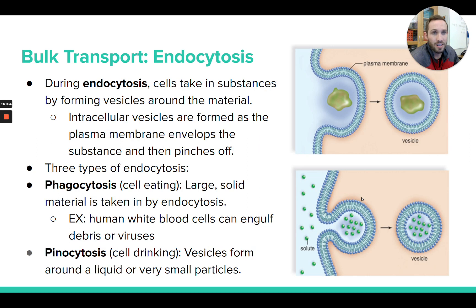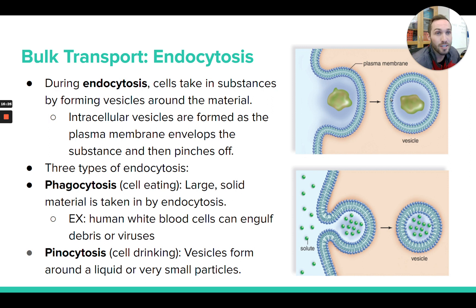The opposite of exocytosis is endocytosis. This is when something outside the cell is being engulfed by the cell via the formation of a vesicle that forms inside the cell. The plasma membrane of the cell surrounds an object outside the cell and then forms a vesicle that pinches into the cell — and now it's inside the cell. This also requires a lot of ATP, as the cytoskeleton allowing this movement is using significant energy.